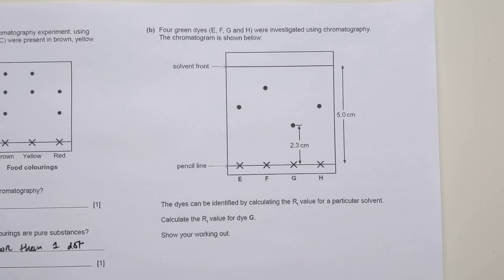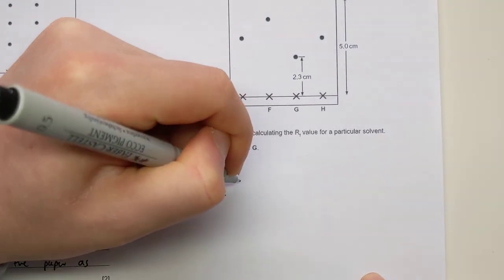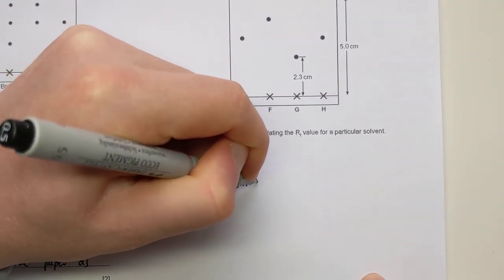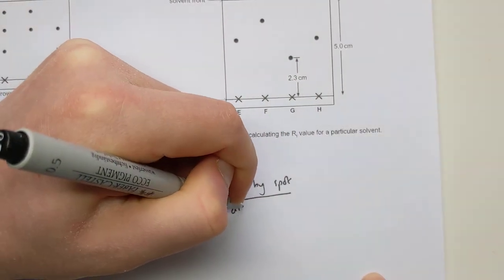Final question then, an RF calculation. So it gives you a separate chromatography experiment E, F, G and H. The dyes can be identified using the RF value for a particular solvent. Calculate the RF value for dye G. Now they are nice to you here. They actually give you the measurements written on. In another question, in another exam, you might have to measure that yourself or use the scale to work them out. But you just need to know what RF values are.